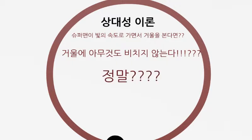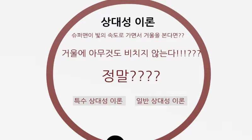그런데 과연 정말 그럴까요? 아인슈타인은 여기에서 모순이 있다는 걸 깨닫고 상대성 이론에 대해서 쓰게 됩니다. 그는 특수 상대성 이론, 일반 상대성 이론을 만들게 됩니다. 일상생활 속에서는 느끼기 힘들 수 있지만 매우 중요한 이론 중 하나라고 할 수 있습니다.